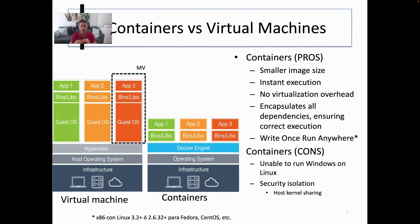If we compare containers with virtual machines, we see that containers have smaller image sizes. They provide instant execution because they are just processes — it's not an entire virtual machine that needs to boot up. So there is no virtualization overhead. Containers encapsulate all the dependencies, ensuring proper execution. You cannot run a Windows container on top of Linux, but you can run Windows containers on top of Windows. So if you're running a Linux virtual machine on top of a Linux physical machine, this use case is probably better covered using Linux containers because it provides fewer virtualization overhead, smaller image size, and instant execution.